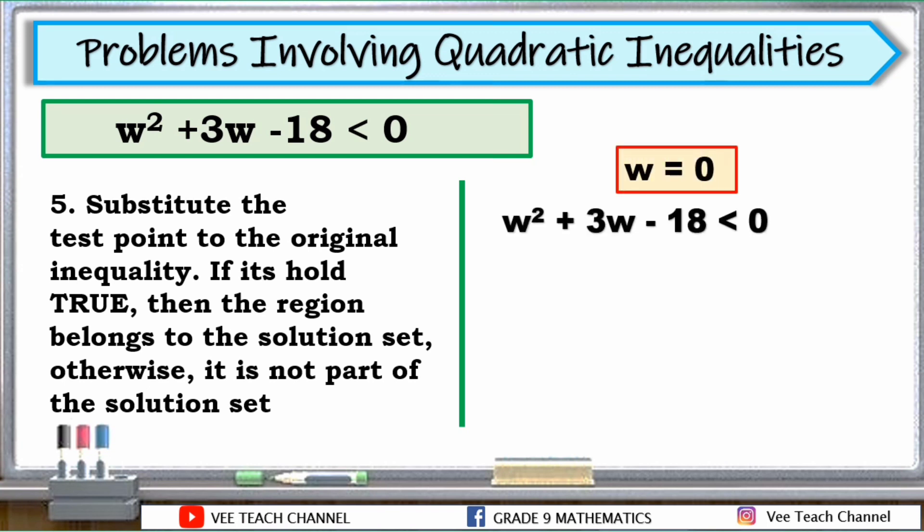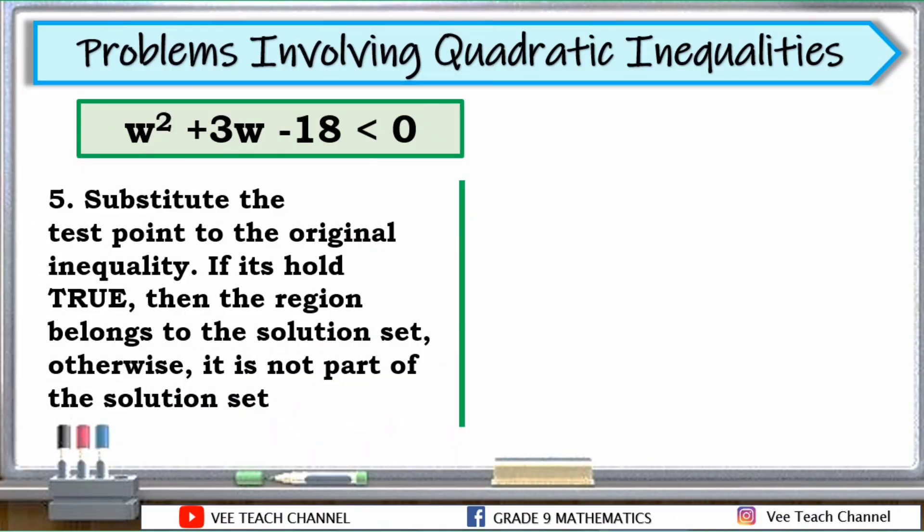Subukan naman natin yung pangalawang test point natin, 0. Palitan natin yung W natin ng 0. That's why we have 0 squared plus 3 times 0 minus 18 is less than 0. Ayan. Obviously, madali lang ito yung solve. Ang answer is negative 18 less than 0. True or false? Mababa ba ang negative 18 sa 0? This is true. Yung pangalawang test point natin is true ang lumabas.